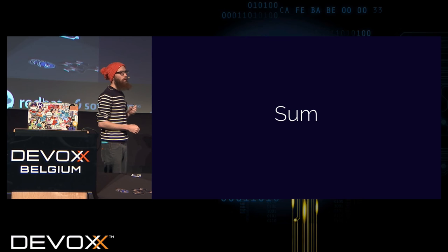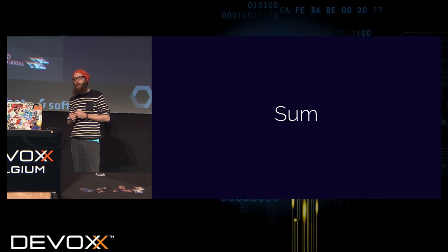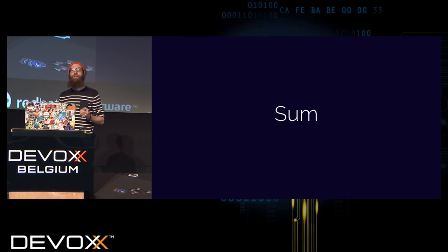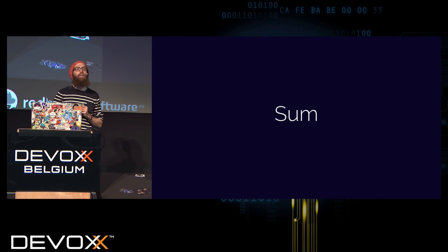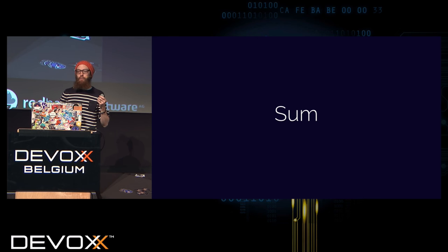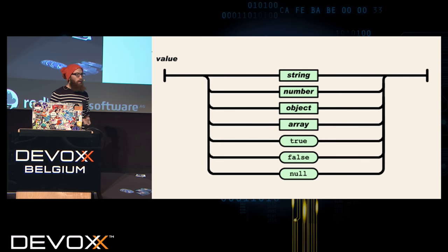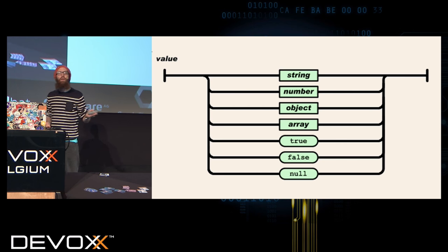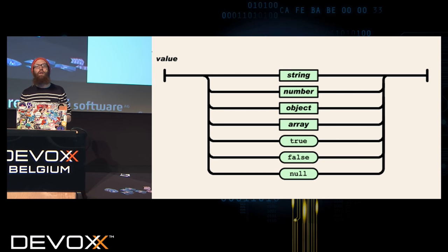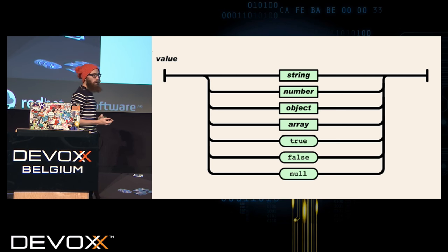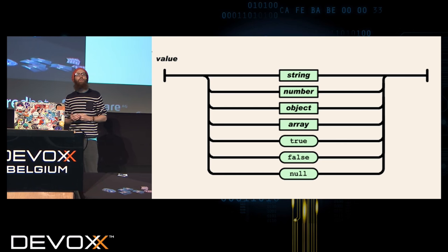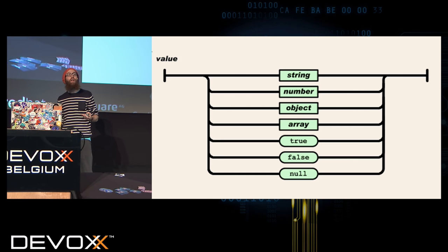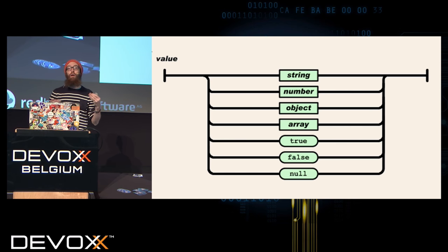A sum type is a less common construction in a language — also called a disjunction or co-product. A very ubiquitous example of a sum type: I have a value that is either a string, a number, an object, an array, true, false, or null. Do you recognize that pattern? It's a JSON value. In JSON you have either one of these possibilities, and that's what a sum type is — just different possibilities and you have one and only one of them.